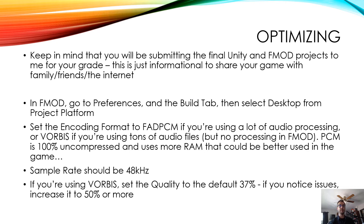You're going to set the encoding format to FADPCM if you're going to use a lot of audio processing. Or, if you're using just tons of audio files but not really a lot of processing, you can set it to Vorbis. FADPCM is 100% uncompressed — it's going to be the better sound, but it uses more RAM that could be better used in the game for shaders, graphics, etc.